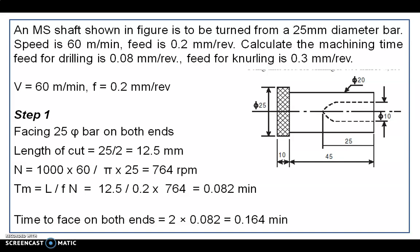Step 1 is facing. Initially it is a 25 mm diameter bar and we need to face on both ends. The length of cut is diameter divided by 2, that is 12.5 mm. The spindle speed equals 1000 × 60 divided by π × 25, which works out to 764 RPM. The machining time equals L÷(F×N) = 12.5 ÷ (0.2 × 764) = 0.082 minutes. Time for facing on both ends is double: 0.164 minutes.